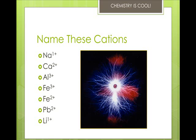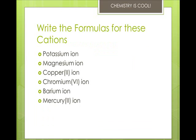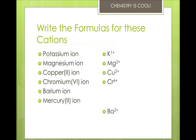Here's the backwards version of that. For the potassium ion, we have K1+. Magnesium is Mg2+. Copper(II) is Cu2+. Chromium(VI) is Cr6+. Barium ion is Ba2+. And mercury(II) is Hg2+.